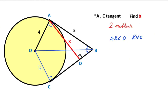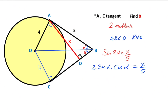Let's call these two equal angles alpha. Focusing on triangle ADB, we calculate sine 2alpha: sine 2alpha equals x over 5. The expansion of sine 2alpha equals 2 times sine alpha times cosine alpha, which equals x over 5. Now, let's call the hypotenuse of the right triangle y. Applying the Pythagorean theorem: 4 squared plus 5 squared equals y squared, so 16 plus 25 equals y squared, giving y equals root 41.